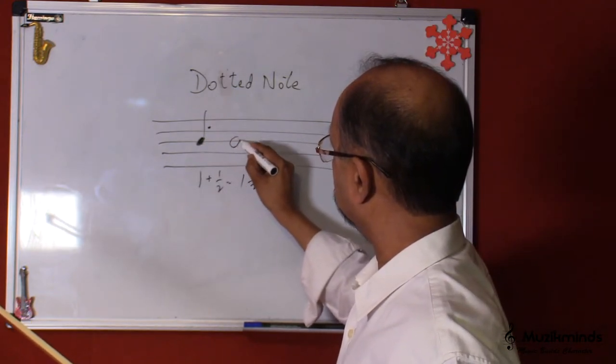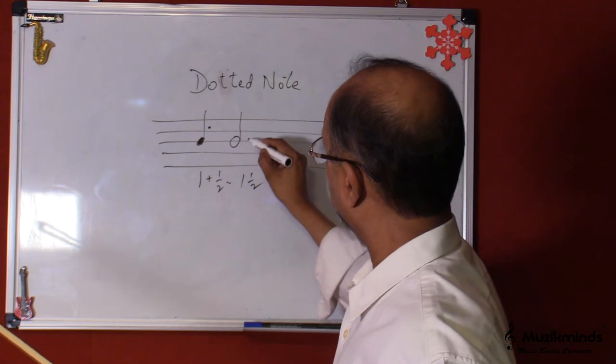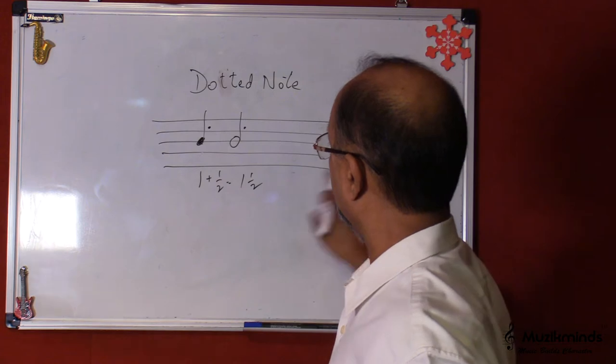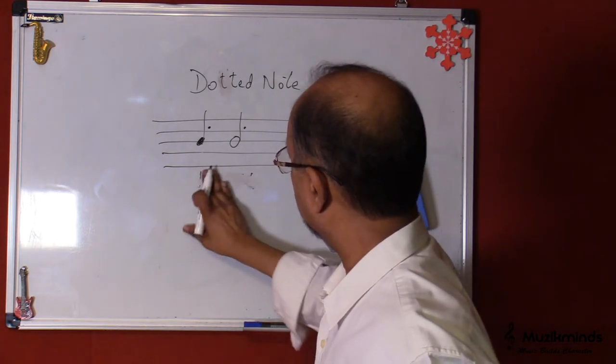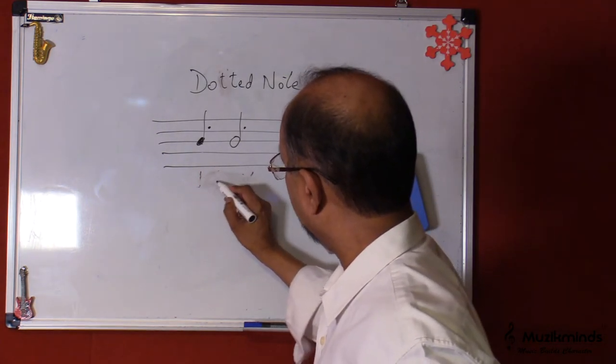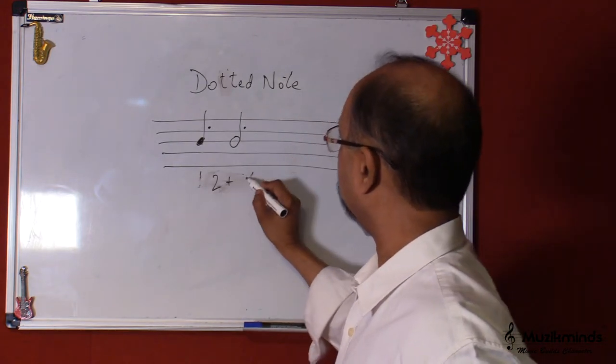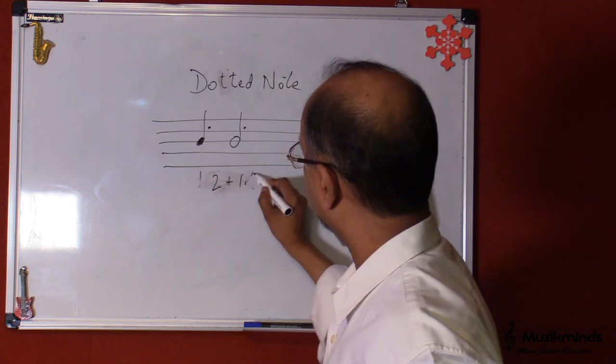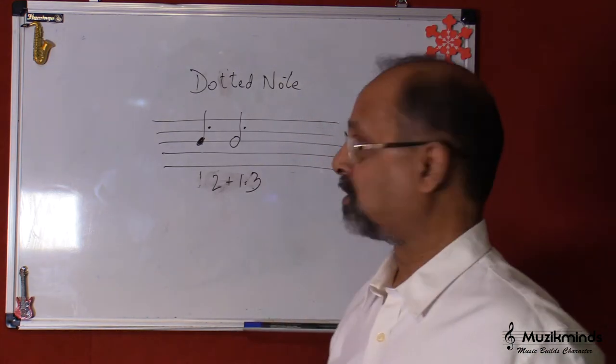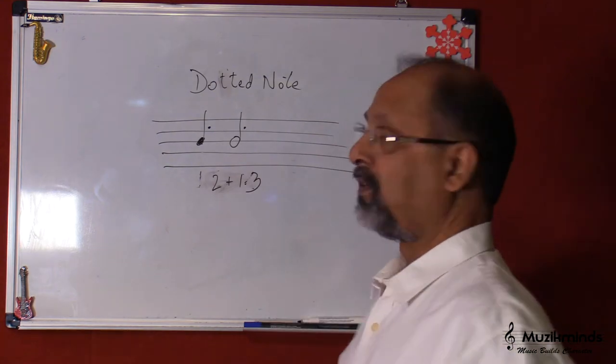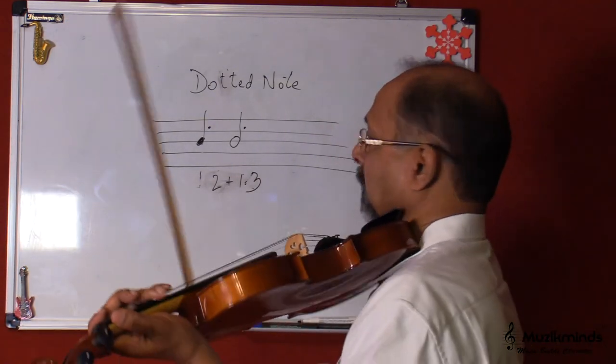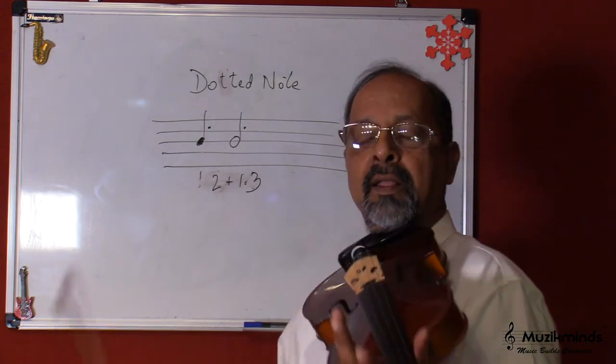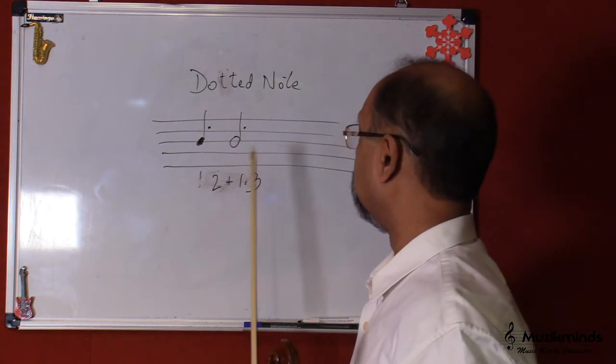Now if this note, instead of a crotchet, this is a minim, which has two beats. So if there's a dot after a minim, it would mean that it has a value of minim, which is two beats plus half of two is one. So we need to add one to two, that would make it three beats. So the length of this note would be three beats. So when we play it, we would play it as one, two, three. So that's the length of this particular note.